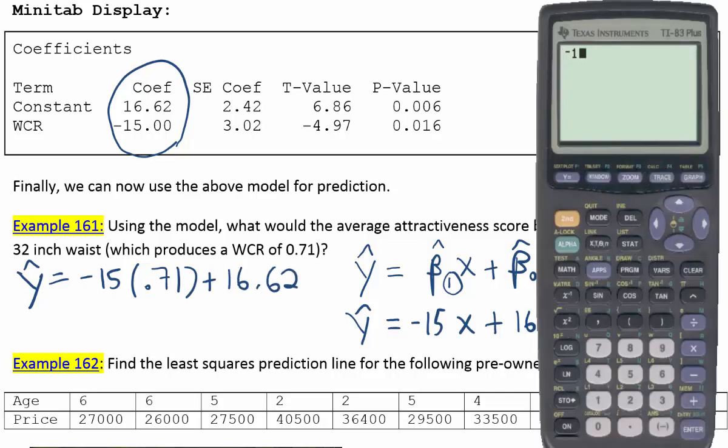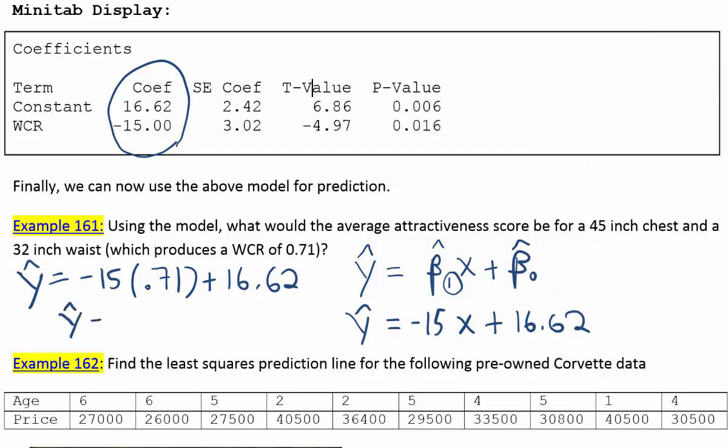So we'll have minus 15 times 0.71 plus 16.62, and the answer is 5.97. So our y-hat is 5.97. So what that represents is the average attractiveness score for someone with those dimensions.